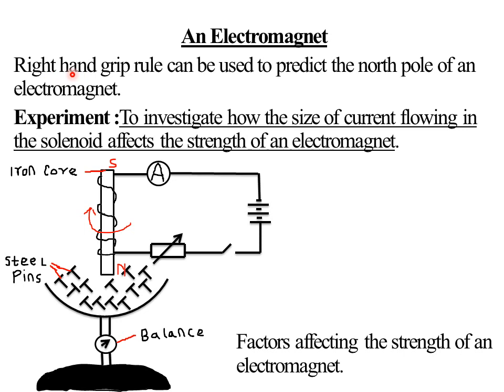Soft iron core concentrates the magnetic field lines within the coil, making the field stronger. The right-hand grip rule can be used to predict the north pole of an electromagnet.